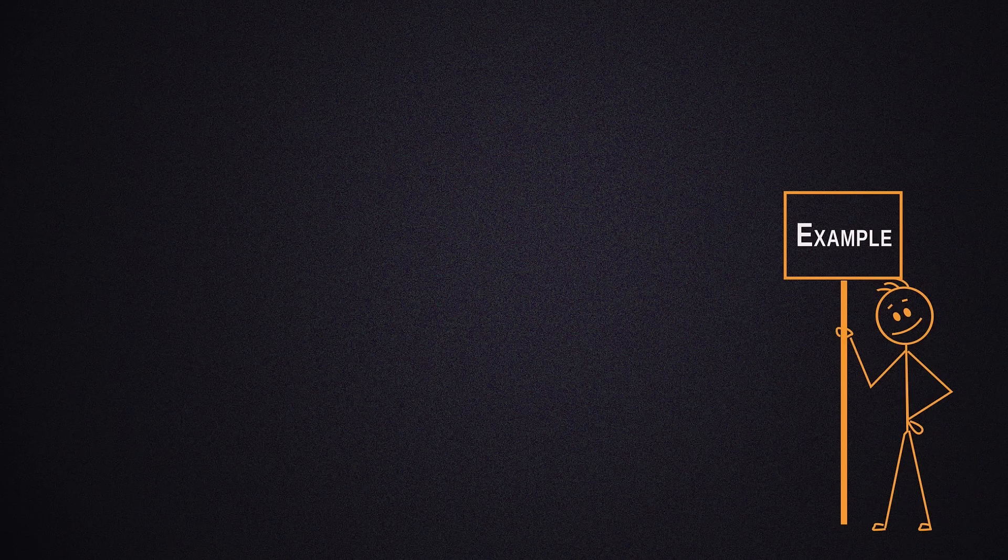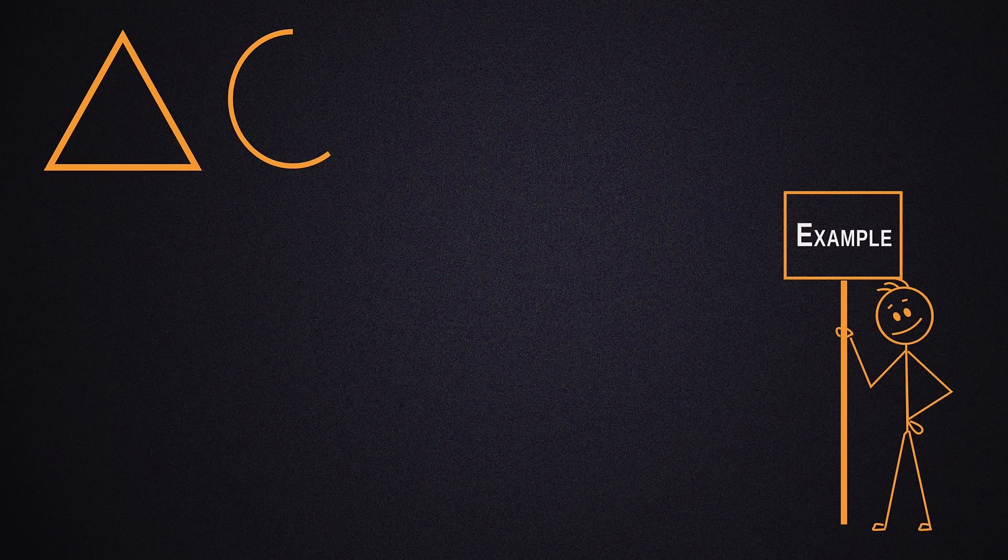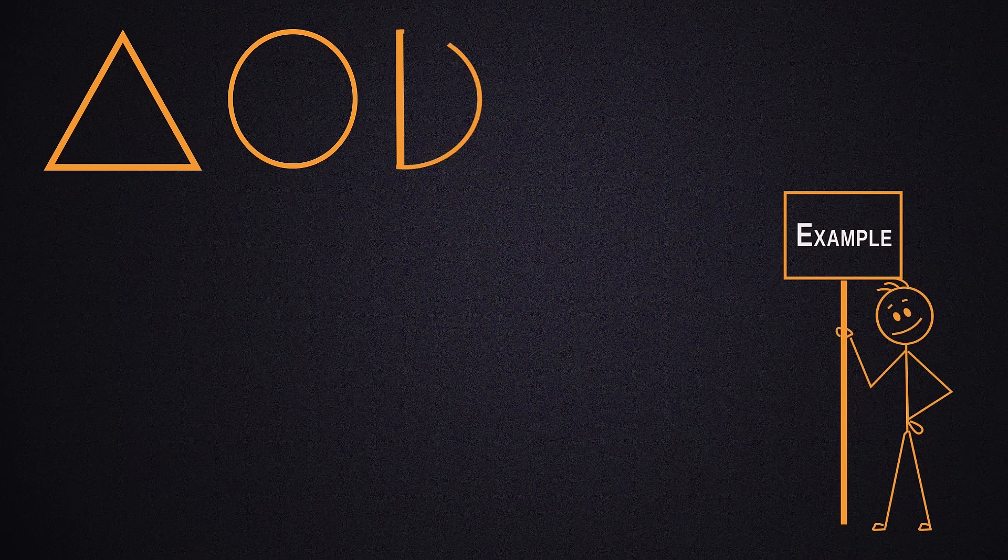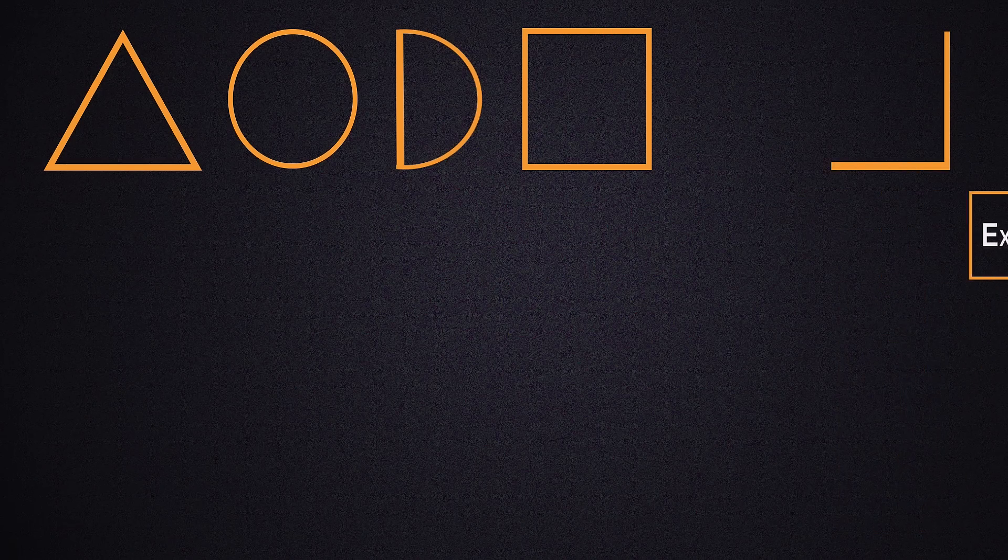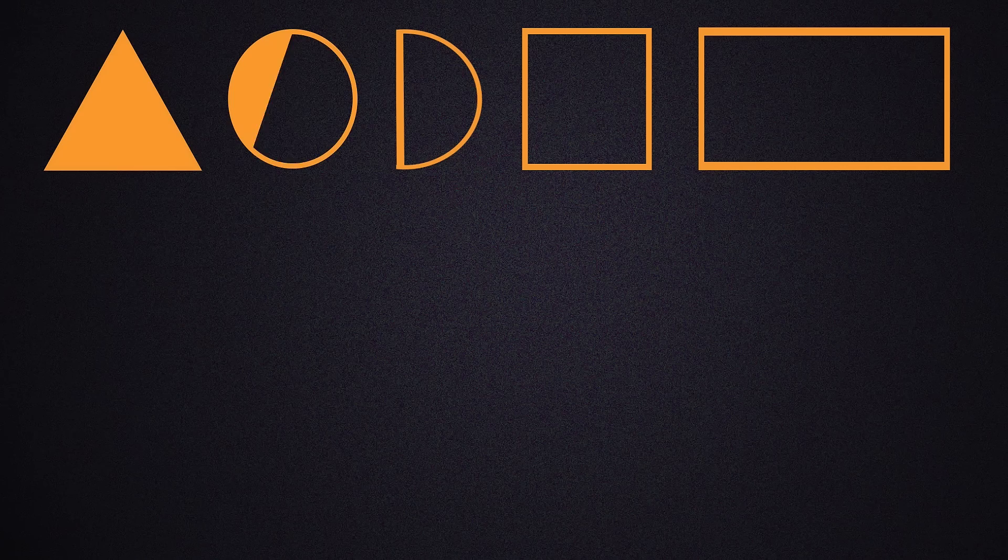Let us go for one more example. Here are five shapes as shown: triangle, circle, semicircle, square and rectangle. Let's count the items here.